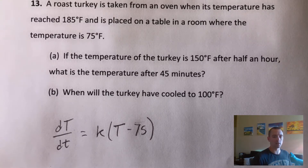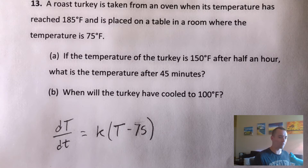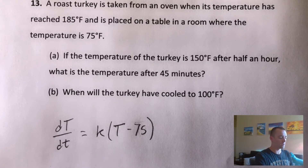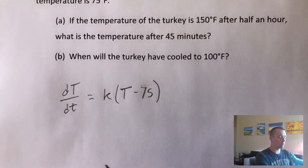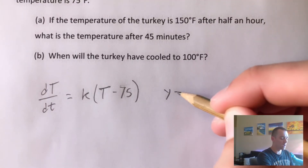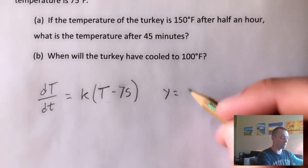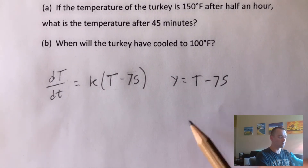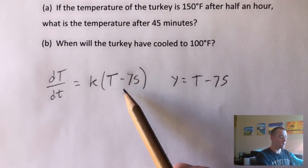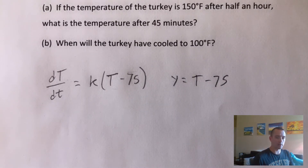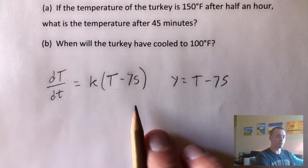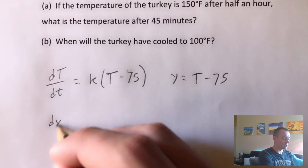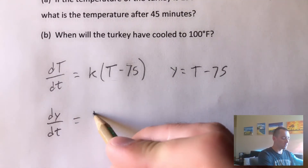So T in this case represents hours after it was taken out of the oven — half an hour or 45 minutes will just be 0.5 or 0.75 hours. The idea here is we're going to introduce a new variable Y, and we're going to make Y equal to T minus 75 in this case. We can plug this back into the equation and change our T to a Y, which lets us rewrite this differential equation as dY/dt equals K times Y.